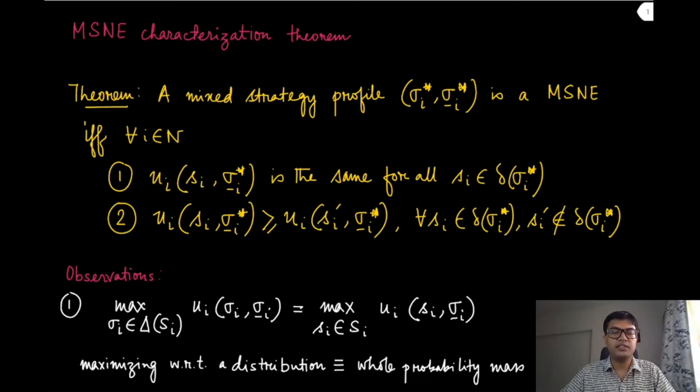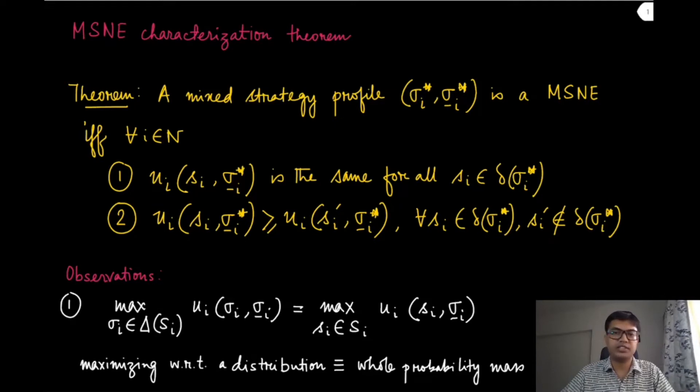The second condition is that this utility is going to be at least as much as the utility of any other strategy which is not in the support.